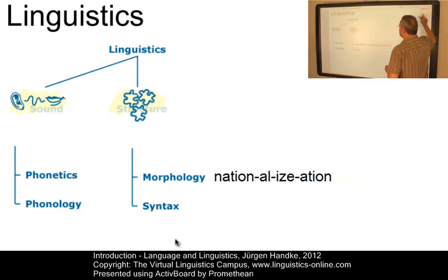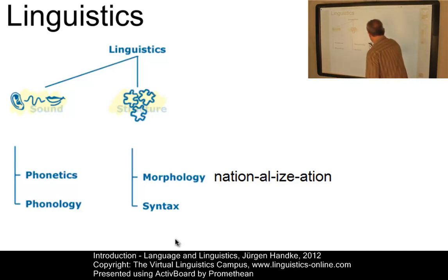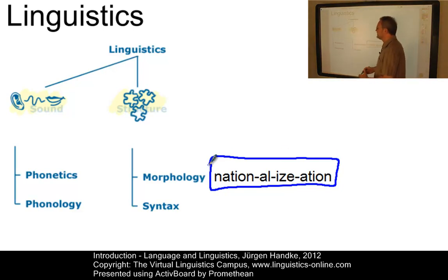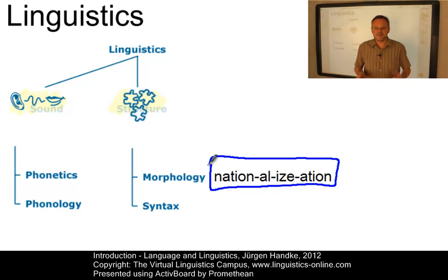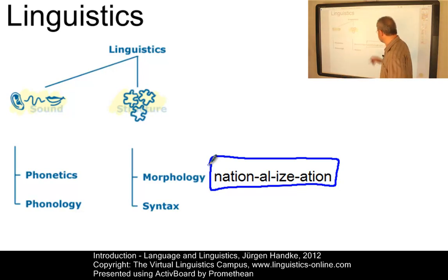In many languages, words are not indivisible but are composed of smaller units. Here we have the word 'nationalization' — and you know it consists of at least four parts. The field that deals with phenomena of this kind is referred to as morphology. It seeks to define how words are built from these smaller units and what the component parts of words are.